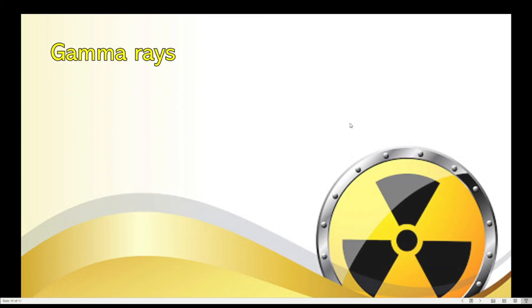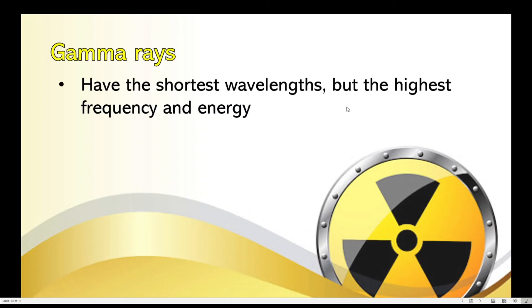Finally, we have the last type of electromagnetic wave. We call that gamma rays. Gamma rays have the shortest wavelengths but the highest frequency and energy. Since they have the highest frequency and energy, this type of radiation, if you are overexposed to it, it can cause serious illnesses. There's a prescribed amount of radiation that you can receive for this type of radiation.